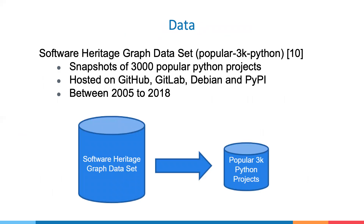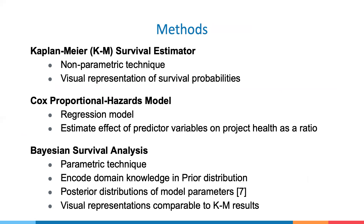We use the same dataset as the original authors, which is a subset of the Software Heritage Graph, and contains useful information on approximately 3,000 open source Python projects. The time frame for this study was between 2005 and early 2018. We used the Kaplan-Meier estimator to create visual representations of survival probabilities over time, known as KM curves. We also used the Cox proportional hazard model to quantify the effect of predictor attributes as a hazard ratio. Finally, we applied Bayesian survival analysis techniques using an exponential prior distribution, which produced visual representations comparable to KM curves.